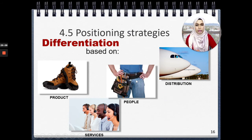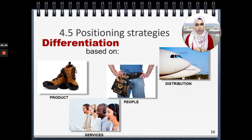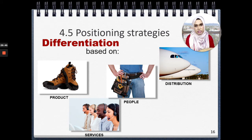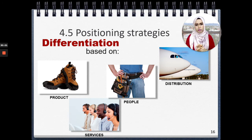Next is differentiation based on people. When you use this differentiation strategy based on people, you are positioning the people that offer that particular service. This is very common in private hospitals, because private hospitals hire the best specialists. For example, when you talk about eye specialists, you might think of Timberland Medical Center because they have the best eye specialists. That is how they differentiate their hospital from other hospitals — yes, other hospitals also have eye specialists, but only in Timberland might you get that particular top specialist. That is how you differentiate based on people.